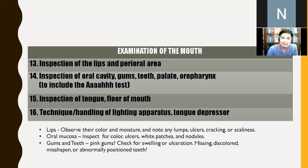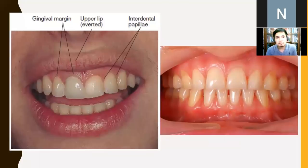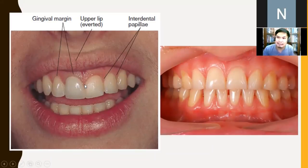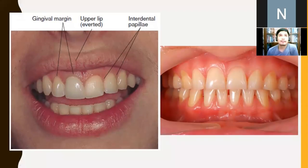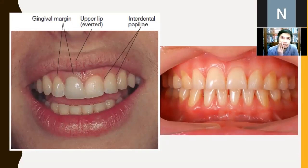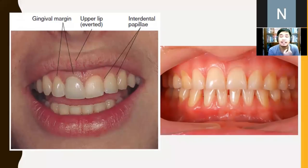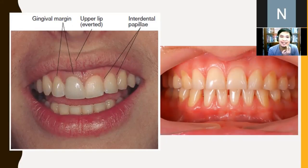Observe the lips for color, moisture, and oral mucosa — are there ulcers? For gums and teeth: any bleeding? Incomplete or discolored teeth? Observe the gingival margin and interdental papillae for swelling or bleeding. In an adult there are 32 teeth — 16 upper, 16 lower. For conventional identification, teeth are numbered 1 to 16 upper right to left, then 17 to 32 lower left to right. Normally, gums are pinkish, though may be darker in individuals with darker skin tones.